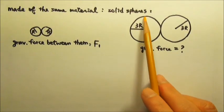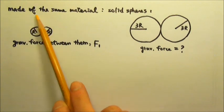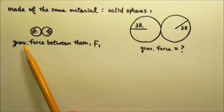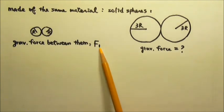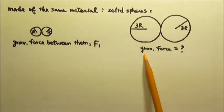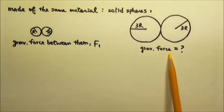Here we have solid spheres, all made of the same material. These two have radius R and R, and the gravitational force between them is F1. These two have radius 3R and 3R. What's the gravitational force between those two?